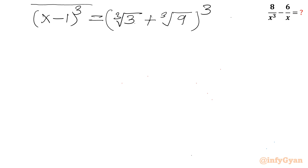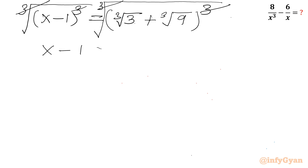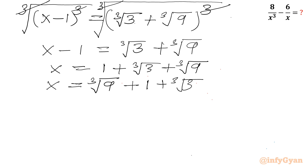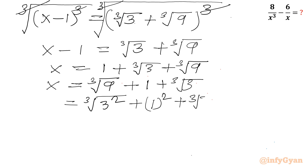Now we can take the cube root of both sides to eliminate the power of 3. The cube root and power 3 cancel out from both sides, giving us x minus 1 equal to cube root 3 plus cube root 9. Adding 1 to both sides we get x equal to 1 plus cube root 3 plus cube root 9. I can rearrange this as x equal to cube root 9 plus 1 plus cube root 3, then write 9 as 3 squared and 1 as 1 squared.